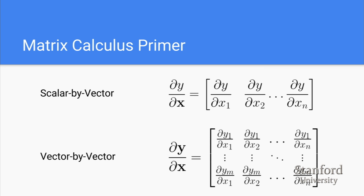Moving to matrix calculus: the derivative over a vector is a matrix of partial derivatives. For the scalar-by-vector case, you get a single vector where each element is the partial of y by the partial of x at that index. For the vector-by-vector case, you get a matrix of partial derivatives (the Jacobian) where each row i contains the partial of y_i with respect to all indices of x.